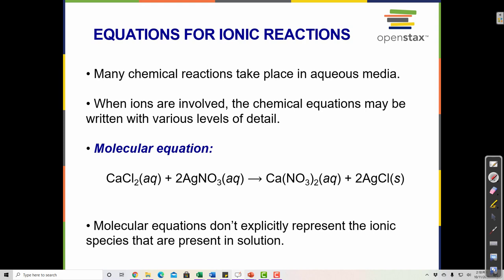To predict the products: each compound is made of two parts — a cation and an anion. Circle the cations (always a metal, always first in the formula) and the anions. What happens in this reaction is that the anions simply switch places: on the left, Ca is with Cl, but on the right Ca is with NO₃. On the left Ag is with NO₃, but on the right Ag is with Cl.